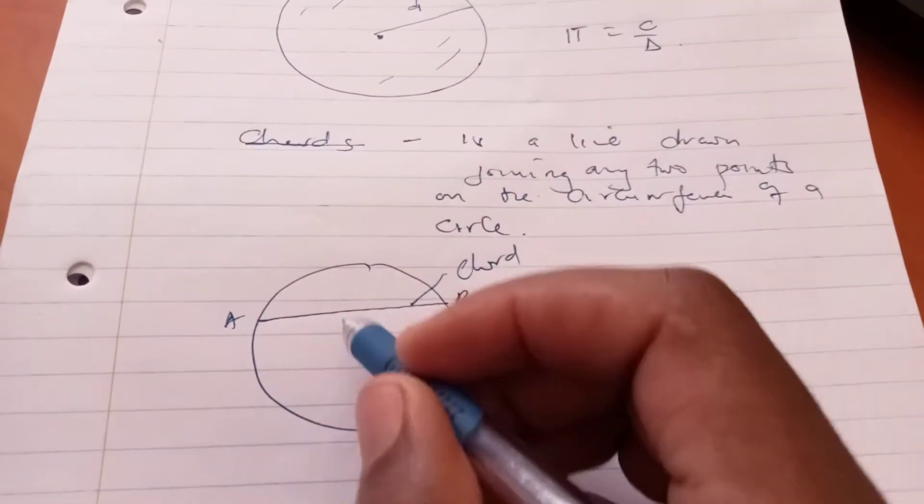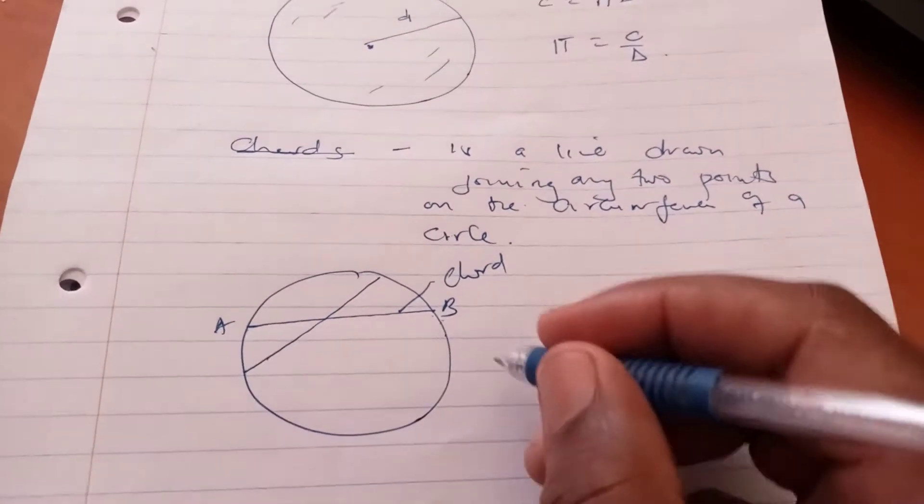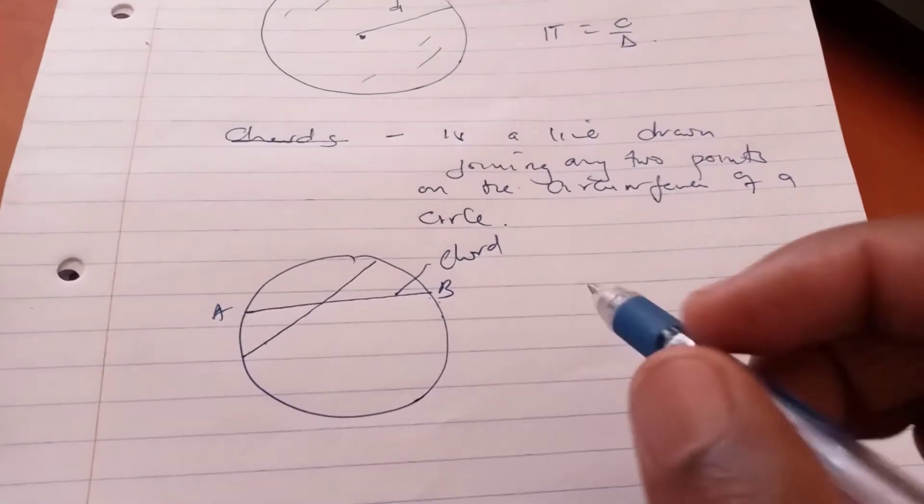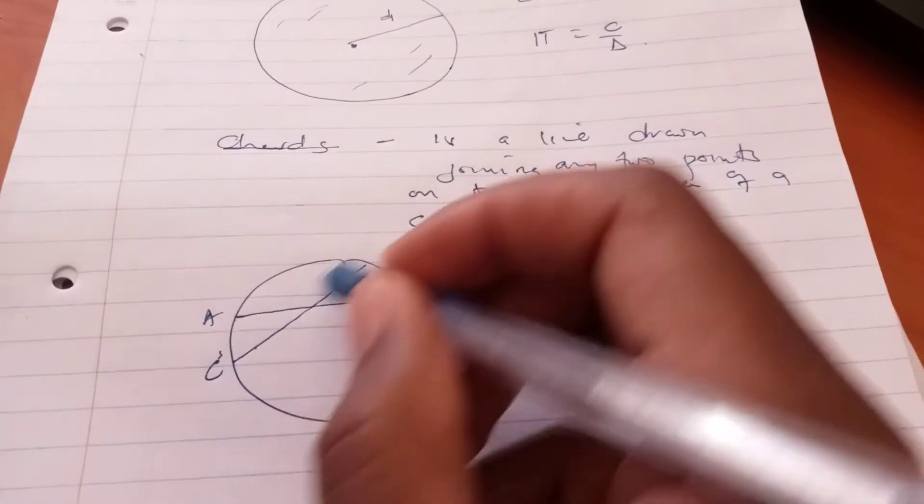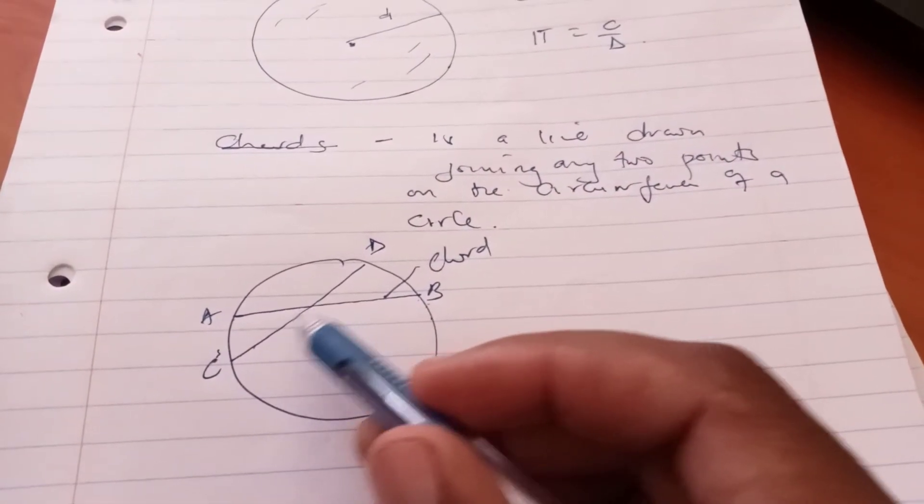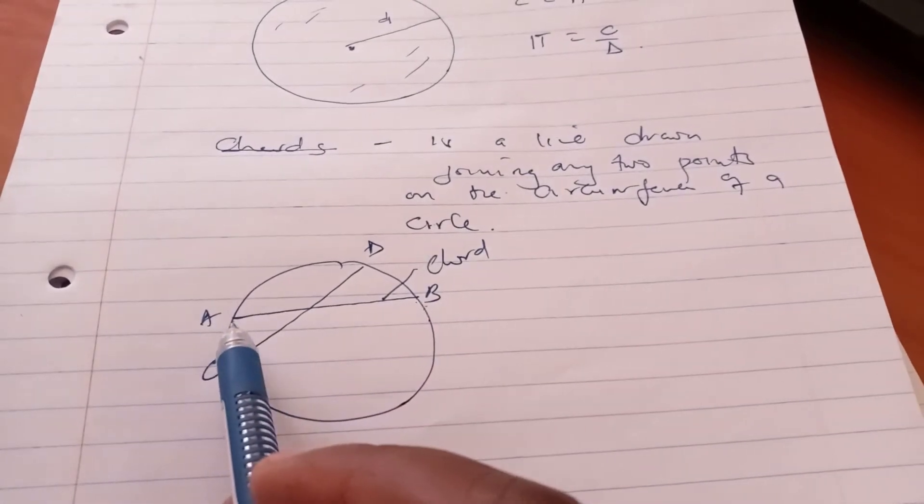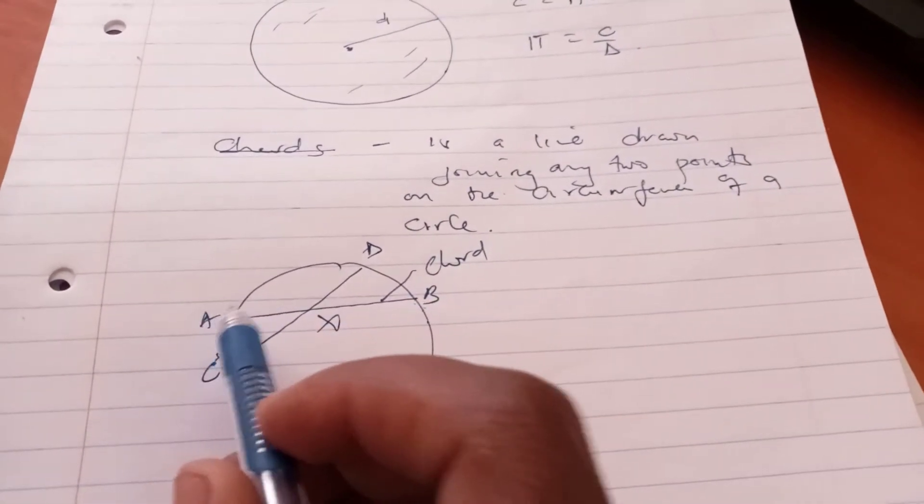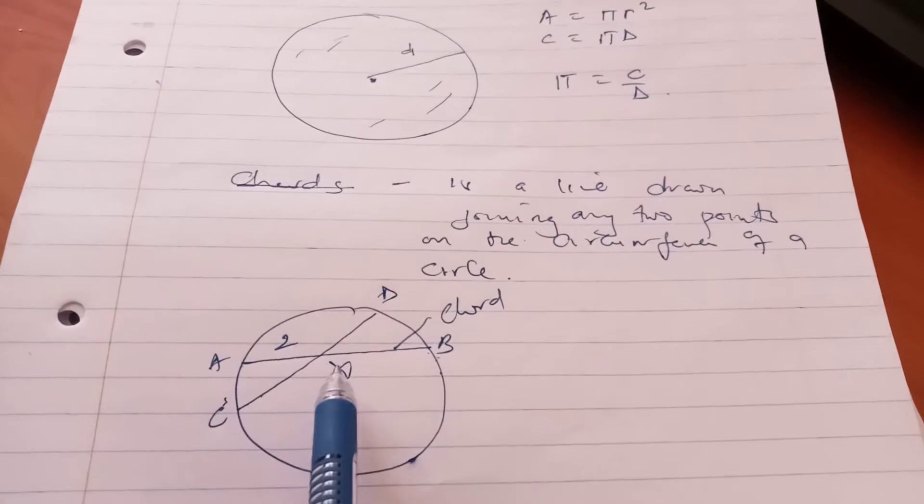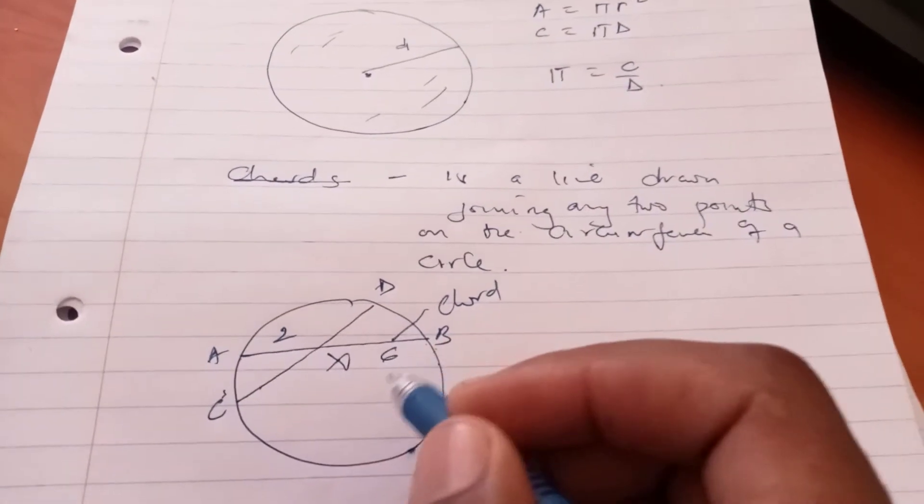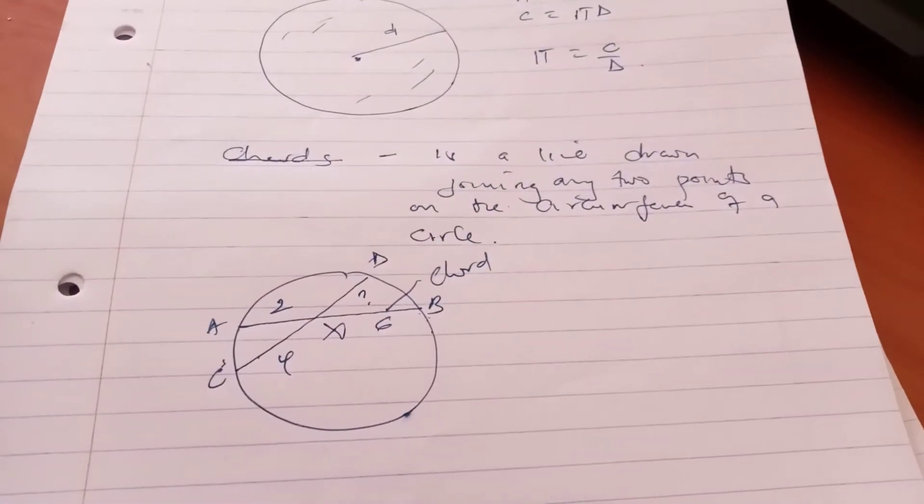Chords may intersect. You may draw another chord so that the chords can intersect internally. That's what we call internal intersection of chords. When chords intersect internally, you may be asked to determine the length of an unknown part. For example, let's say they intersect at a point X here. You are given AX is 2, XB is 6, and CD is 4. So what is XD?